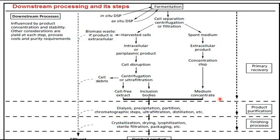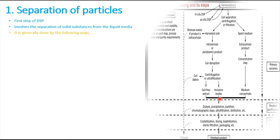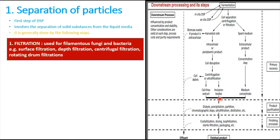The first step in downstream processing is separation of particles. This involves the separation of solid substances from the liquid medium. If the product is in the liquid medium we take that; if it is in the solid medium, the solid is taken and the liquid becomes a byproduct. This separation is generally achieved by filtration, centrifugation, or other processes.